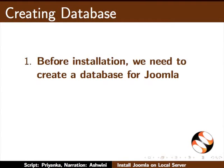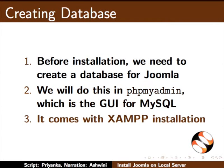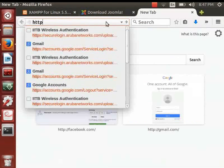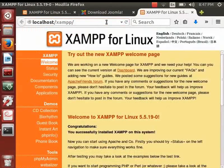Before we proceed with the installation, we need to create a database for Joomla. We will do this in phpMyAdmin, which is the graphical user interface for MySQL. It comes along with the XAMPP installation. Switch to the browser and type http://localhost. On the XAMPP page, in the menu on the left under Tools, click on phpMyAdmin.